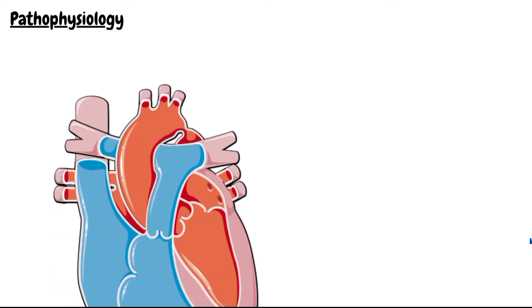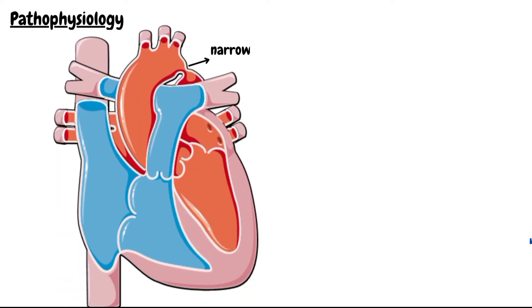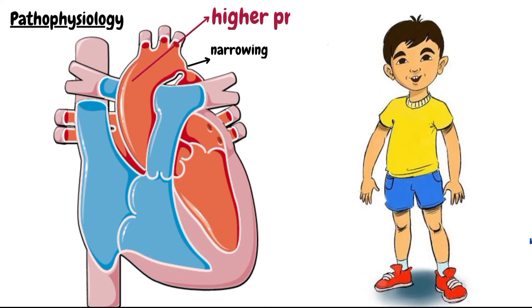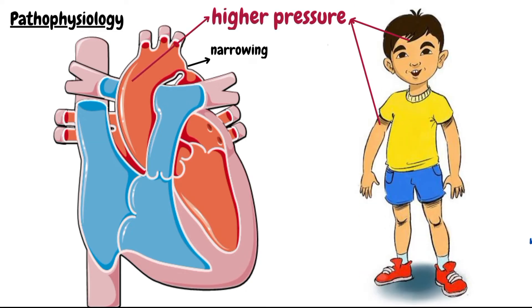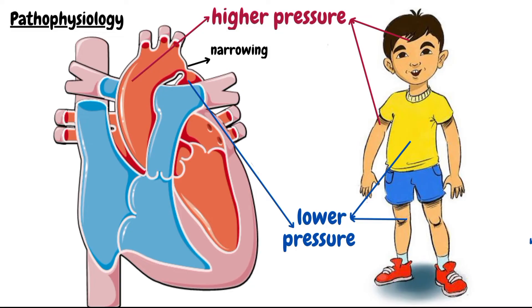Now we will discuss the pathophysiology of coarctation of aorta. It is quite simple. The localized narrowing of the aorta causes increased pressure proximal to the defect, that is in the upper extremities, and decreased pressure distal to it, that is in the lower extremities.